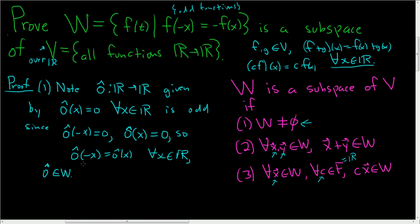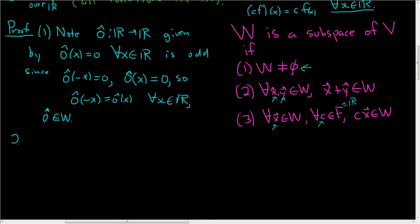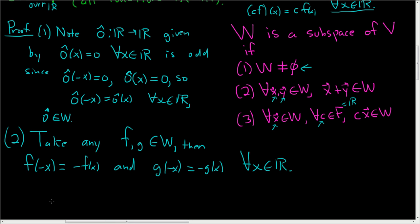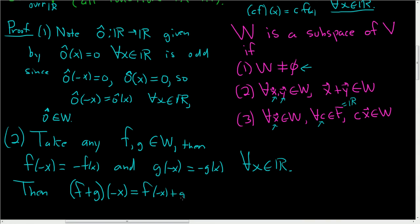Now we have to show that the sum of any two vectors in W is also in W. Take any f and g in W. That means f of negative x equals negative f of x, and g of negative x equals negative g of x, both for all x in ℝ. We now look at the sum: we need to show f plus g is in W. So we examine f plus g of negative x, which by definition of addition equals f of negative x plus g of negative x.